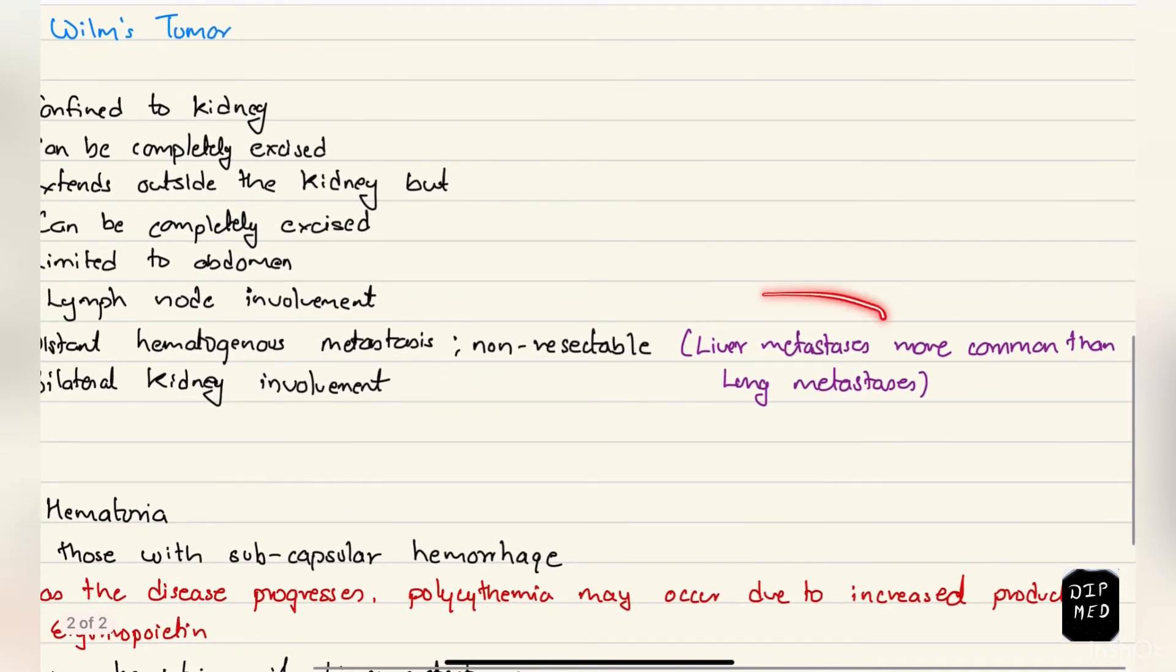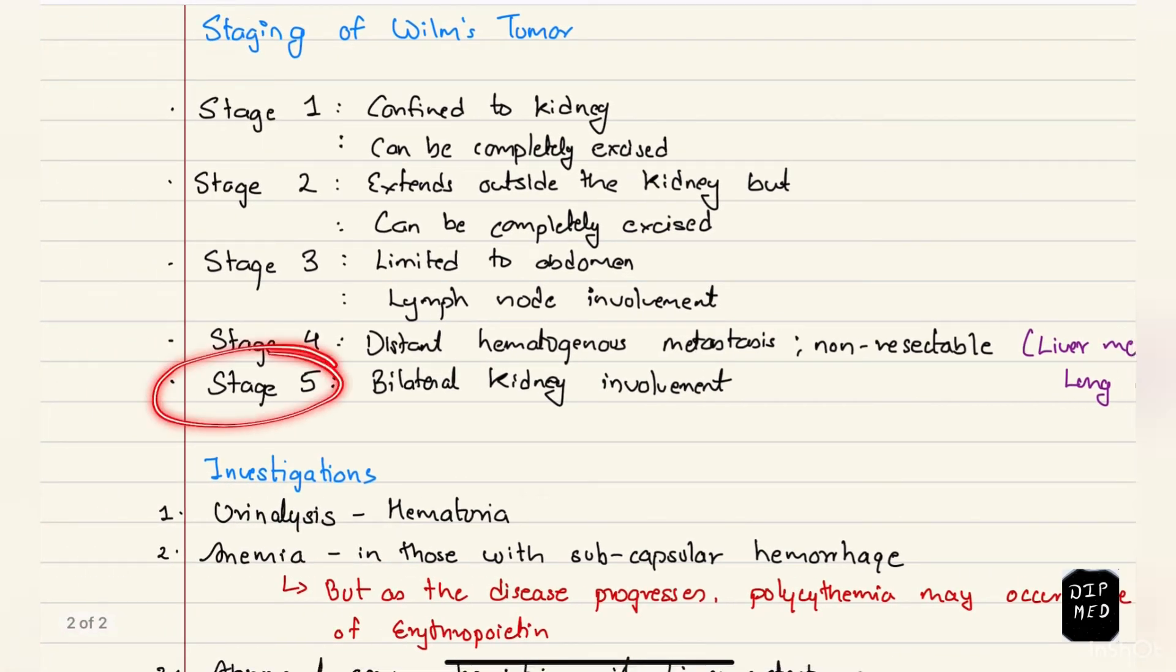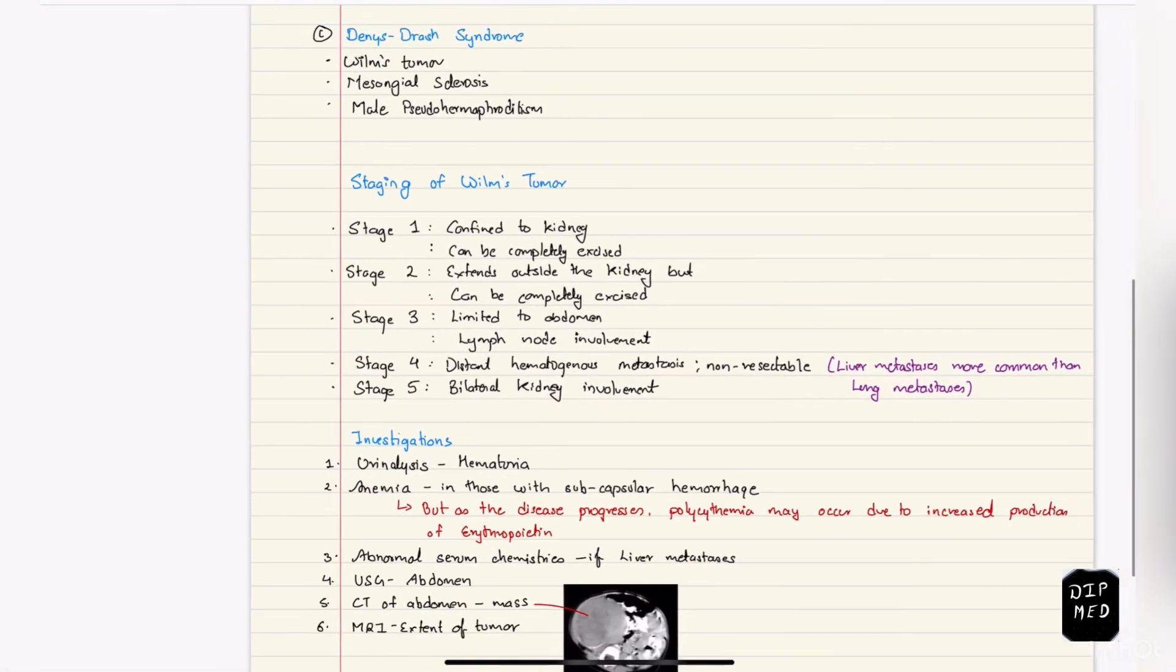Stage 4 is characterized by distant hematogenous metastasis and since there is metastasis, it is non-resectable. Talking about metastasis, liver metastasis is more common than lung metastasis. Stage 5 is when both kidneys are involved, bilateral kidney involvement.